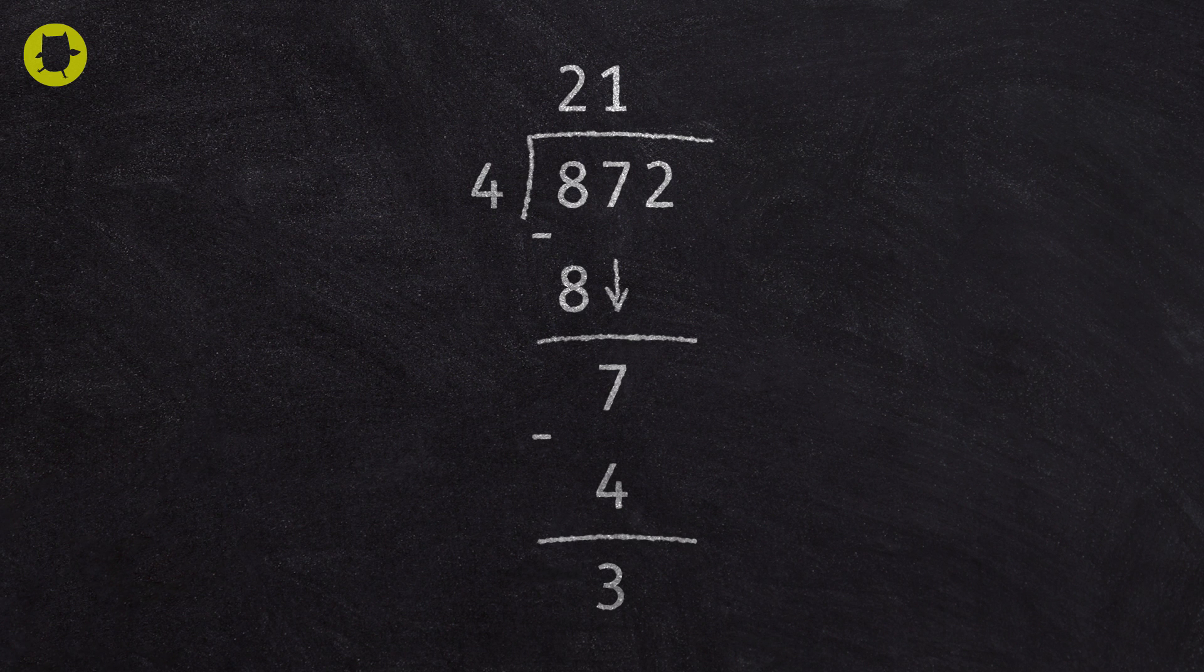Then we look at how many groups of 4 there are in 3. We know the answer is not a whole number, so we bring down the 2.